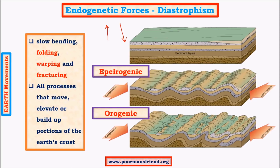In diastrophism there are two important subheadings: epirogenic movements (continent-forming movements) and orogenic movements (mountain-building movements). Epirogenic movements mainly occur within the crustal interior of the tectonic plate, whereas orogenic movements occur at the margins. For example, in the Indo-Australian plate, the interior undergoes epirogenic movements while the margins undergo orogenic movements.